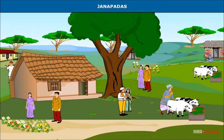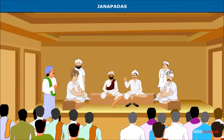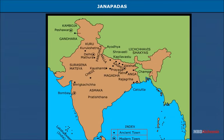Janapadas: Different clans of Aryans settled in different territories in the Ganga-Yamuna valley, which came to be known as Janapadas. When several Janas settled in a particular area and their population increased, the entire area was known as a Janapad. The clans sat together to solve common problems like defense, irrigation, etc. These came to be known as Ganas, and their system of government was known as Ganasangha, through which they made laws and evolved the system of republican governance.